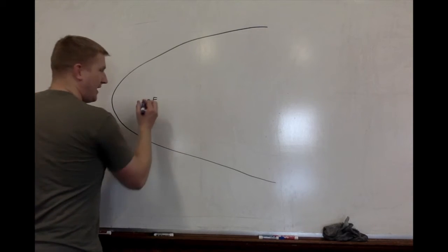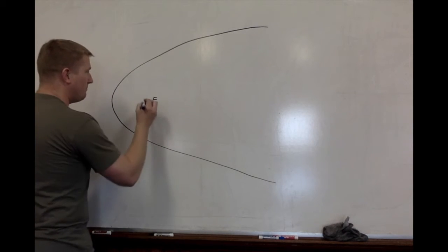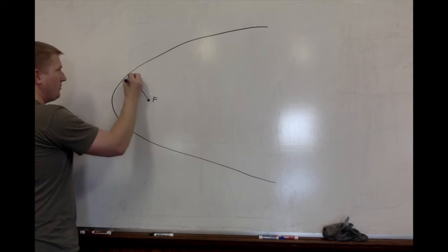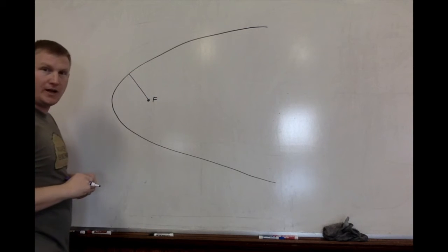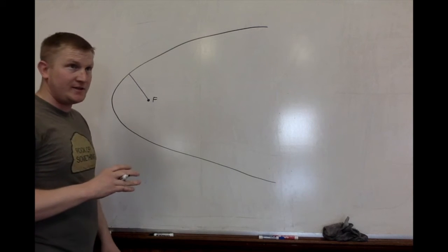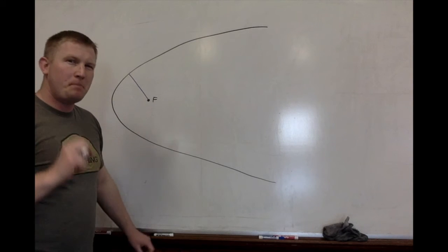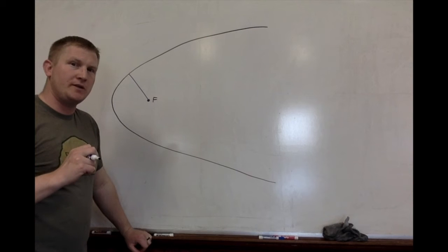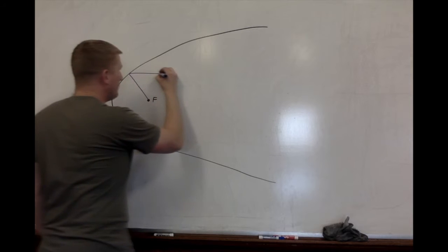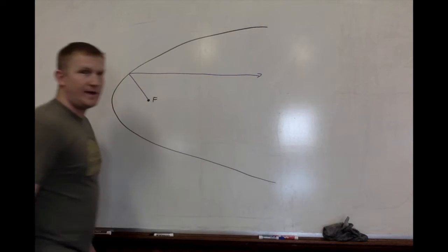So if we take a particle of light, or a wave—whichever camp you fall into, technically the two camps are one—if we take a particle of light and shoot it out from the focus point to the parabola, it's going to reflect and head straight for the other focus point. But that other focus point is infinitely far away. It's going to go like that forever.